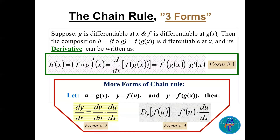The chain rule has three forms and we use it when we need to differentiate the composition of two functions, f circle g, which is f of g of x. Let's call it h, so we need h prime. Form number one: (f circle g)' = f prime of g(x) times g prime of x.